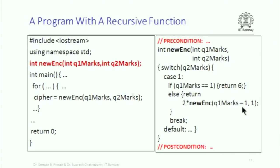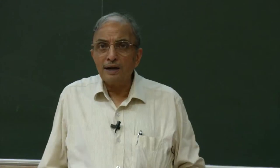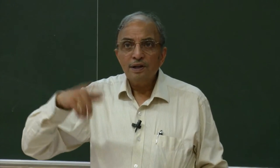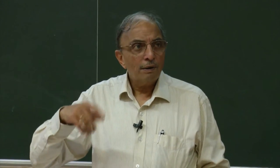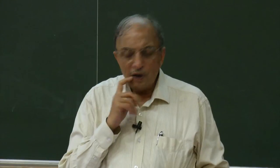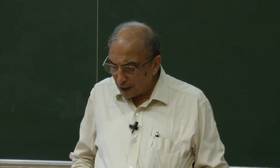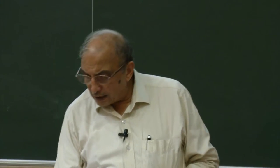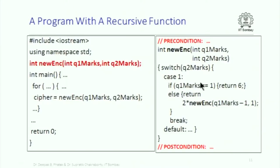So what does it do? q1_marks are successively reduced for whatever value of q2_marks you have given. In the case where q1_marks is 1, it returns 6; otherwise it returns that recursive value. There is a break after this.